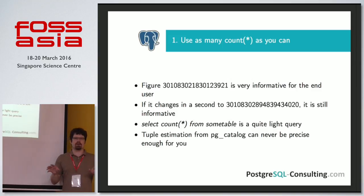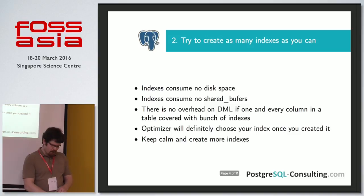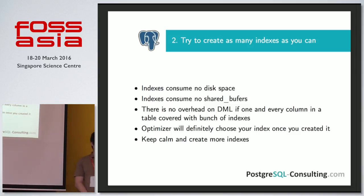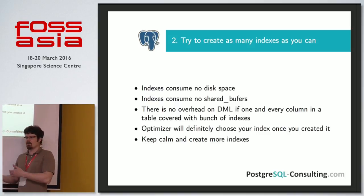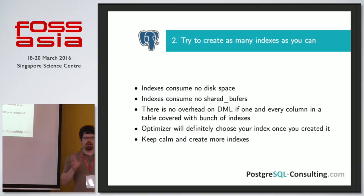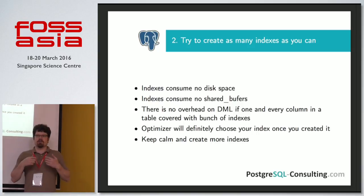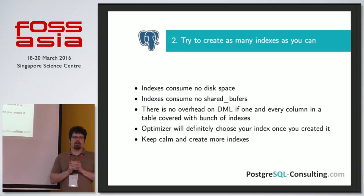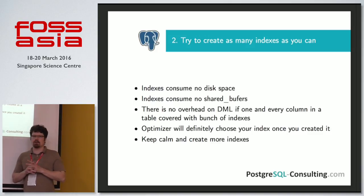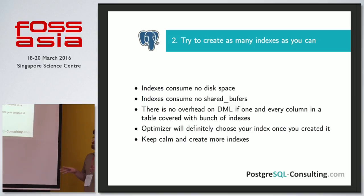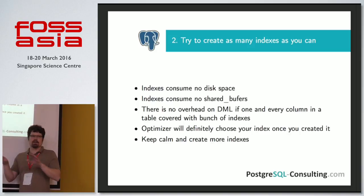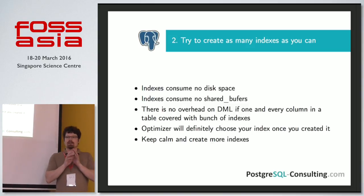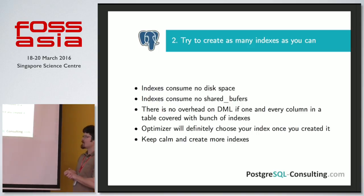You just do not need to use approximate figures from reltuples and from pg_catalog — that's a boring thing, do not follow that. The next one: try to create as many indexes as you can. It's boring to create indexes after you've created your schema, so just cover each and every column with some index. Better yet, use Django and it will do it for you. Indexes are quite free of any charge — they do not consume space, they do not consume shared buffers, they do not bother your autovacuum, they do not slow down Postgres at all. And actually, if you create in advance some indexes even for non-existent queries, the optimizer will certainly use them. Just keep calm and use more indexes.